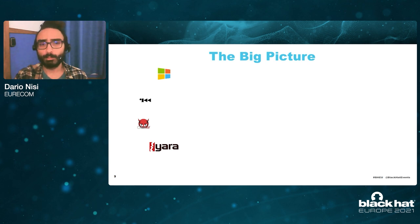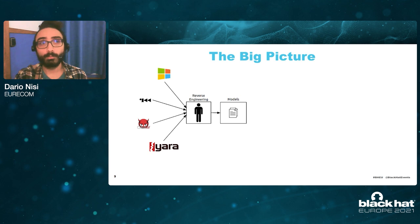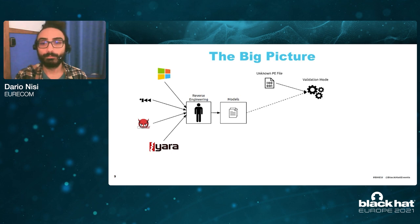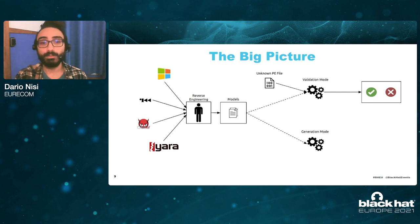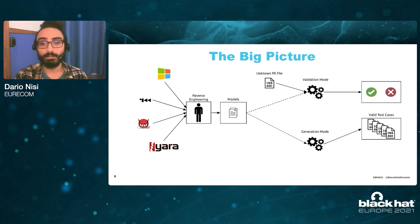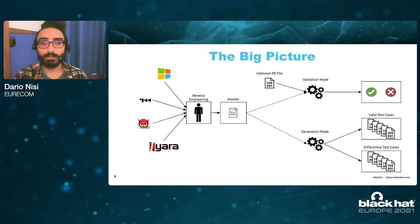Let's have a look at the big picture of our work. We start with some software that we want to compare. We reverse engineer it to model their behavior, especially how they parse the PE file format. We feed these models to our analysis framework, which can operate in two modes. The first is validation mode, which given an unknown PE file and a model is able to tell us whether this unknown PE file is valid or not according to the original software without running the software itself. The second mode is generation mode, which given the models can create automatically valid test cases — files that the original software would consider as valid — and also differential test cases, which are files that are valid according to one software but invalid for another.